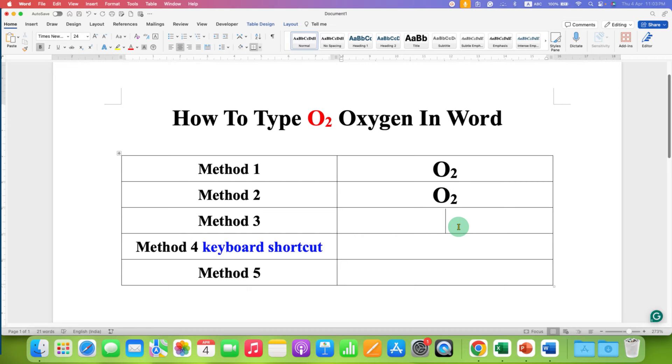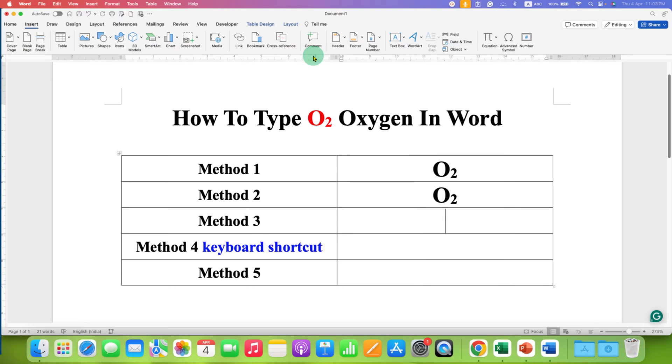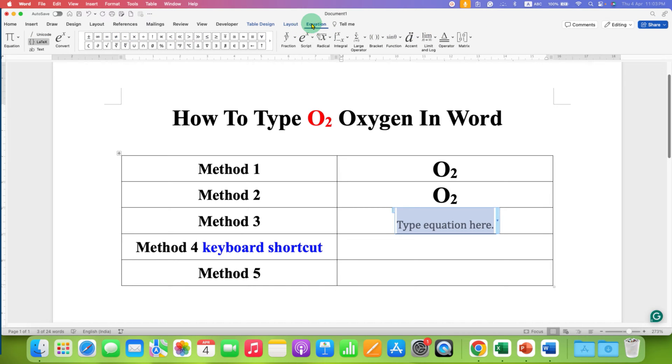In the third method, if you are writing a chemical equation, go to the Insert tab. You will see the option of Equation. Click on it and under Equation, you will see the option of Script. Select the second option, subscript.